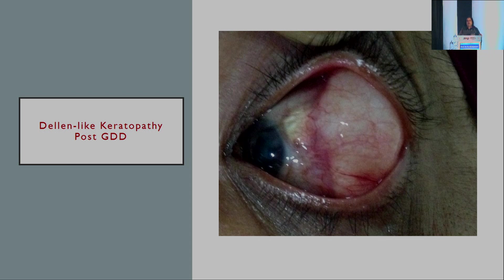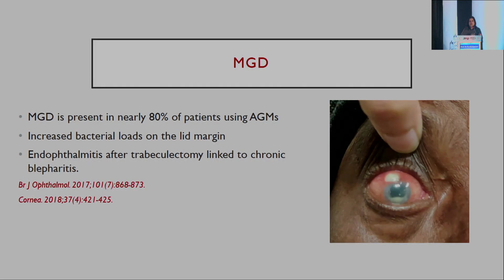DELIN-like keratopathy is not limited to post-trabeculectomy; it has also been seen post-implants. We often ignore the lids because we are so focused on pressures, perimetry, and the optic disc. Meibomian gland dysfunction has been seen in nearly 80% of patients using anti-glaucoma drugs — it may seem innocuous but it compromises postoperative bleb status. The rate of infections in patients with MGD is much higher, and giving preoperative doxycycline can help. Endophthalmitis after trabeculectomy has also been linked to chronic blepharitis.